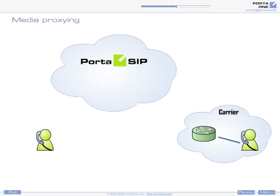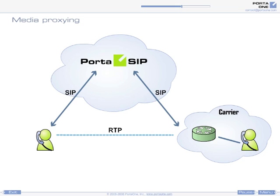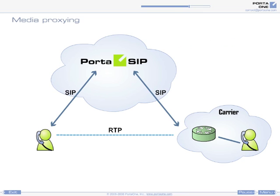When a third-party carrier is involved in call termination, you have a flexible tool for managing policies for proxying media traffic. With some carriers, Portisip can proxy call signaling only, allowing direct communication between the IP phone and the remote gateway. This saves bandwidth on your side and allows the voice stream to travel on the network by the shortest possible path.